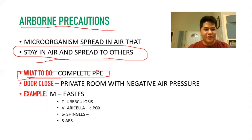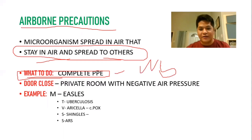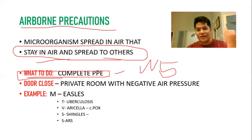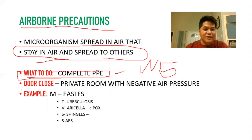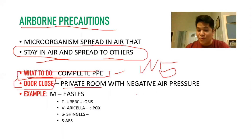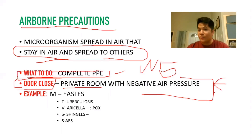For airborne precautions, complete PPE is required — all five: wash hands, wear gloves, wear gown, wear mask, and wear face shield or goggles. You need to close the door when the client is in the room and place the client in a private room with negative air pressure so pathogens will not transfer when they talk or sneeze.